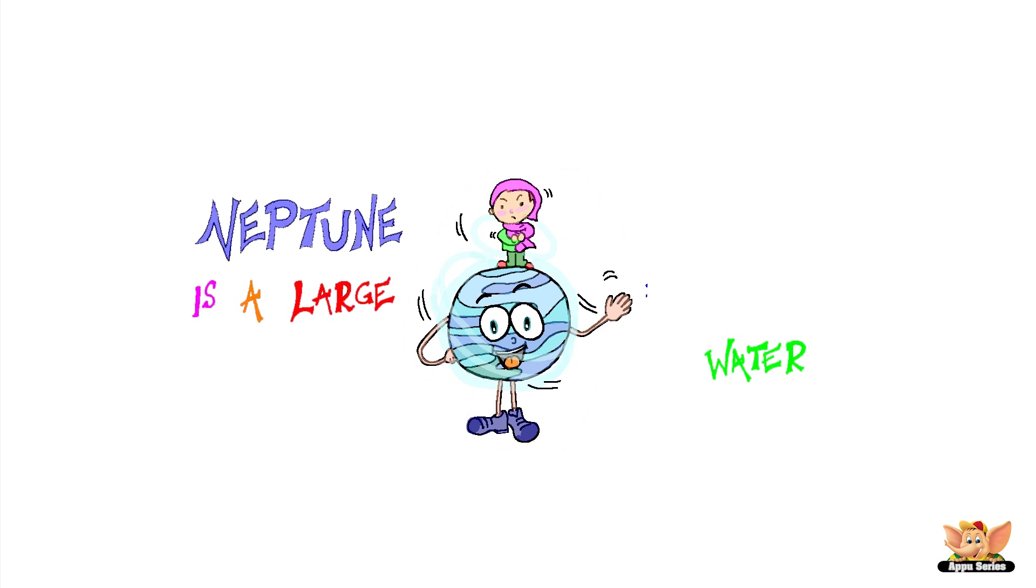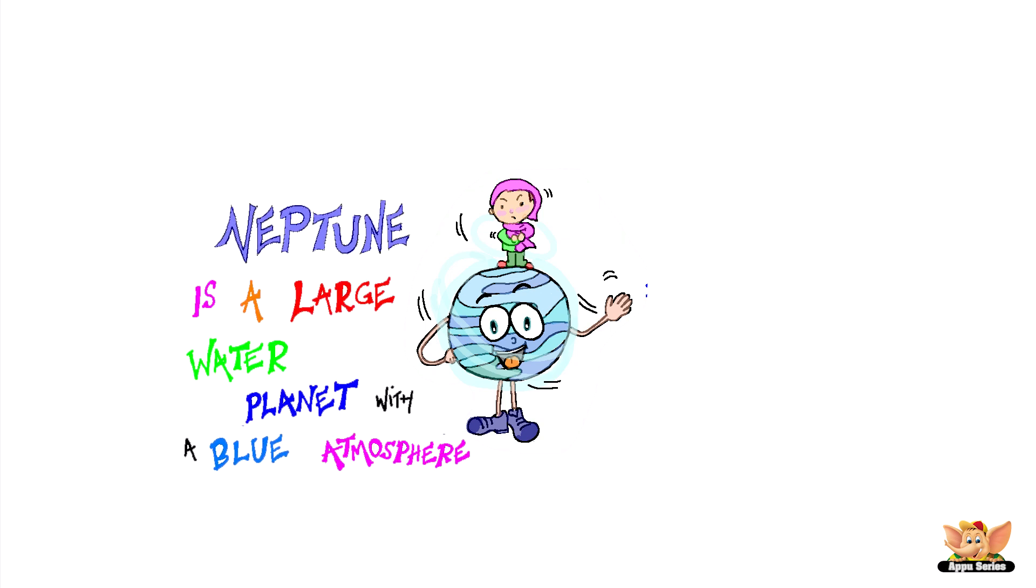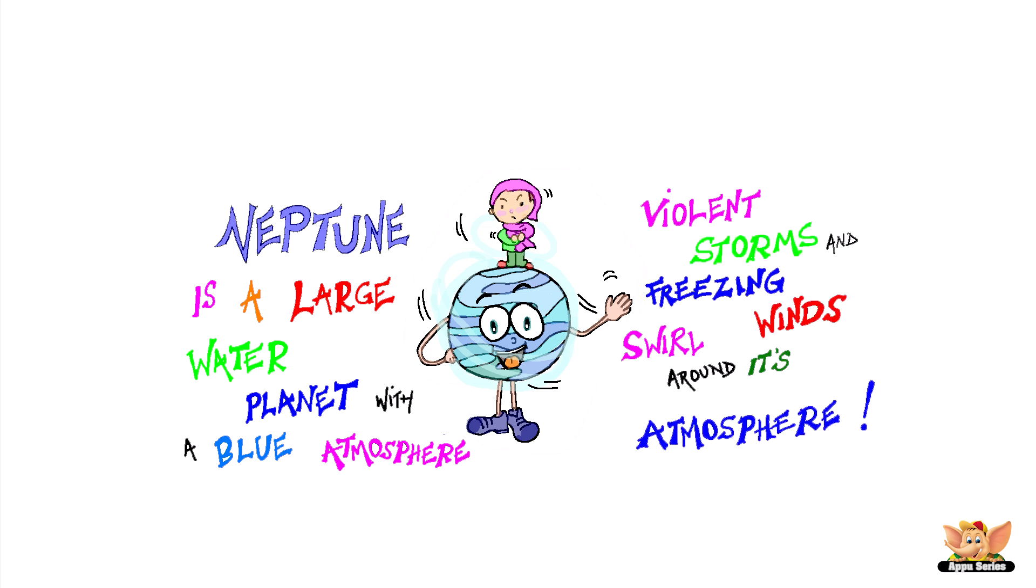Neptune is a large, water planet with a blue atmosphere. Violent storms and freezing winds swirl around its atmosphere.